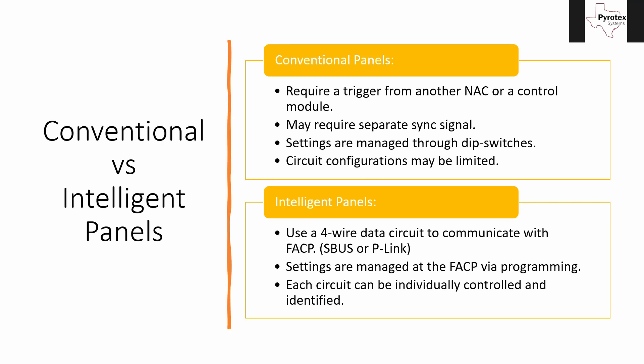Another cool thing about SBUS and PLINK: they can be T-tapped. With Class B supervised circuits — like a NAC circuit or a speaker circuit — if you want to add a device in the middle, you have to pull a send and return wire over to it; you can't just pull one wire because you have to interrupt the signal path to keep it fully supervised. But with intelligent circuits like SLC, SBUS, and PLINK, you can T-tap it because every device is supervised at its unique address. This can cut the amount of wire in half, especially getting SBUS from one end of a school to the other.